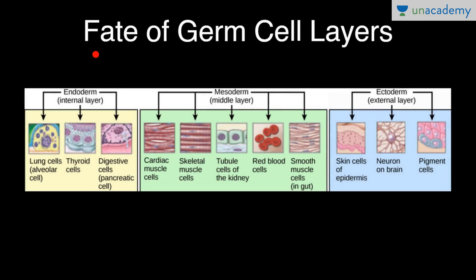Fate of germ cell layers. So we have three germ cell layers: ectoderm, endoderm and mesoderm, which give rise to all the parts of our body. So which layer forms which, we shall deal with it.